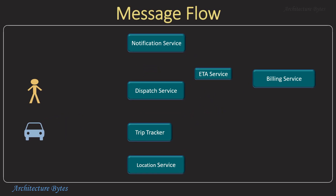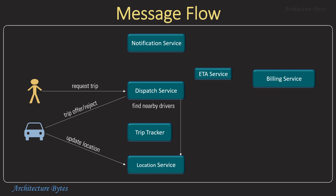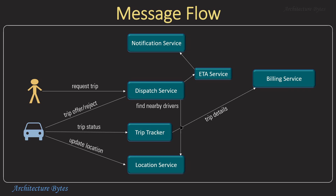Let's look at some interactions between the actors and various services. The driver sends location updates to the location service every few seconds, so the location service is aware of the coordinates of every driver. A rider sends a trip request to the dispatch service, which in turn calls the location service to find drivers in proximity of the rider. Once it has that information, the trip is offered to a nearby driver. When accepted, the trip begins. The ETA service may be invoked to find expected time. Trip status updates are sent to the trip tracker service every few seconds. When the trip ends, the billing service gets the trip details like route, calculates the amount to be charged, and this information is sent to the rider and driver via the notification service. This is a simplified flow to give you an idea of the message exchanges.